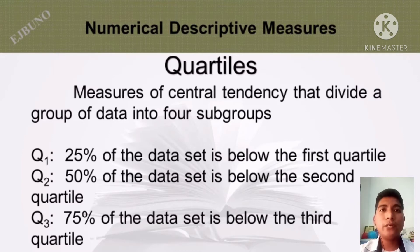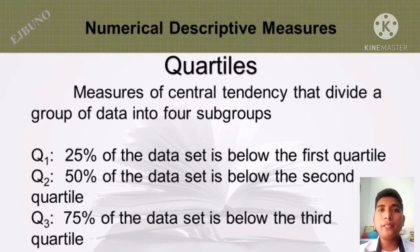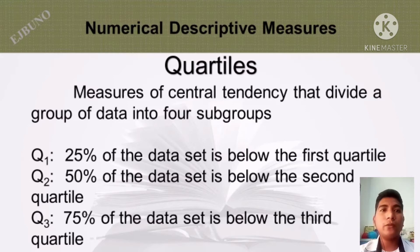Quartiles are a measure of central tendency that divide a group of data into 4 subgroups. Q1: 25% of the data set is below the 1st quartile. Q2: 50% of the data set is below the 2nd quartile. Q3: 75% of the data set is below the 3rd quartile.